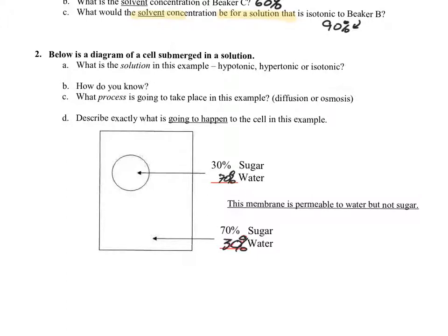When something says hypotonic, they're talking about the solute concentration — so you're looking at the sugar in this case. When you're comparing, compare apples to apples and not oranges. If I'm looking at 30% sugar, I should be looking at 70% sugar, not the water. Make sure if you're comparing inside to outside that you're comparing water to water and solute to solute.